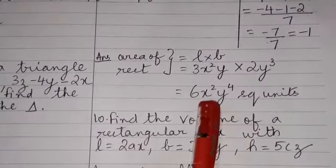And area is always expressed in square units, so the area of the rectangle is 6x²y⁴ square units.